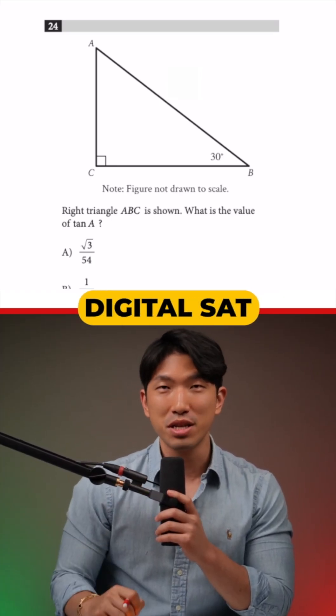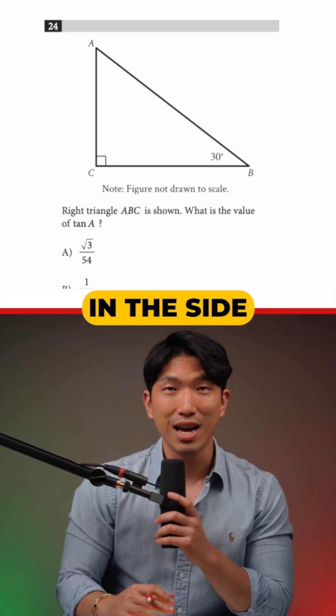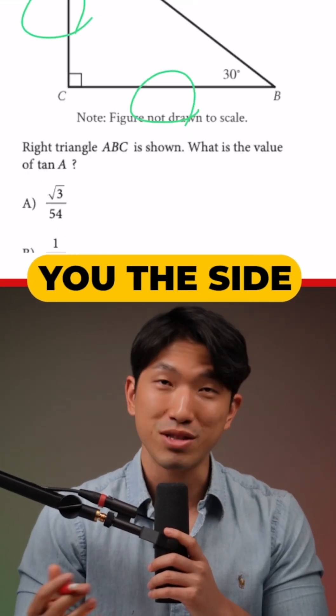So these trick questions are the easiest on the digital SAT. You literally have to just pop in the side length and you're good to go, except they just don't give you the side length anymore.